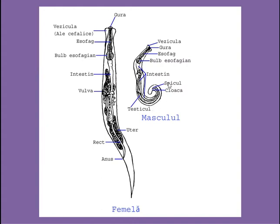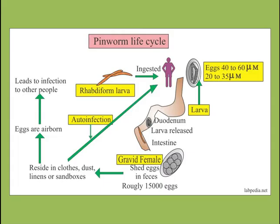To summarize sexual dimorphism: males are smaller with a curved posterior end, while females have a straight pointed posterior end. Males have a cloacal opening; females have separate anal and genital openings. The male has a copulatory spicule absent in the female. The lifespan is short, lasting around two months. It is a monogenetic parasite whose life cycle is completed only in humans, though pinworm infection has also been found in certain bonnet macaques.